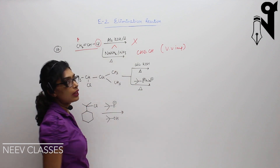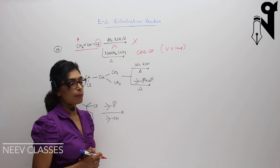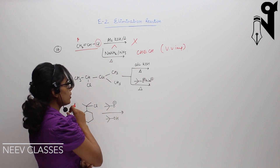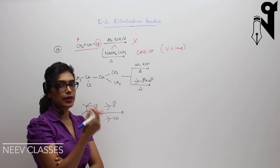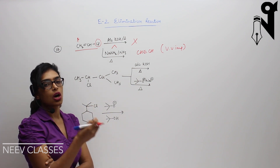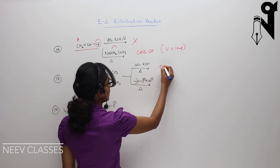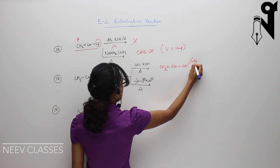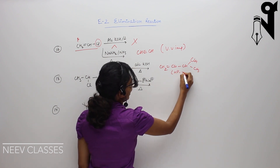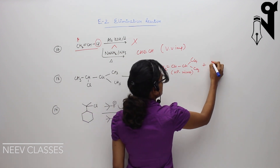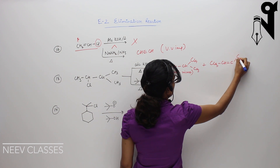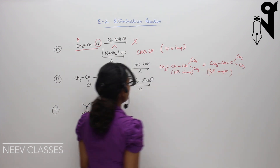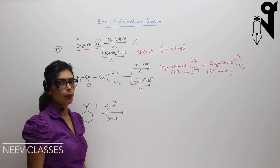For the thirteenth question, we have solved the same molecule before with alcoholic KOH. Two products are possible: the Zaitsev product (CH=CH-CH(CH3)-CH3 — major) and the Hoffman product (CH2=CH-CH(CH3)-CH3 — minor). The question is whether anything changes with a different reagent.